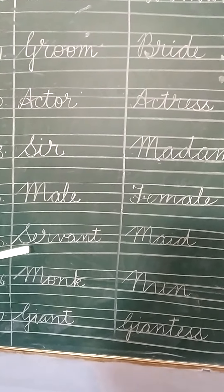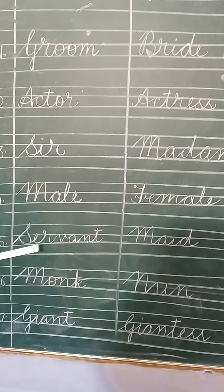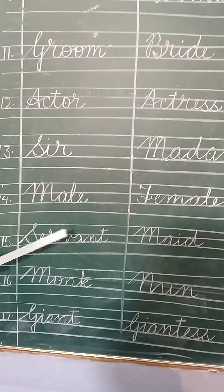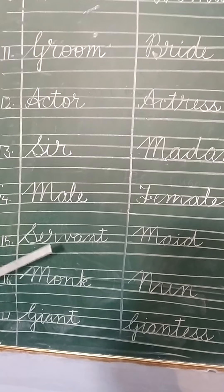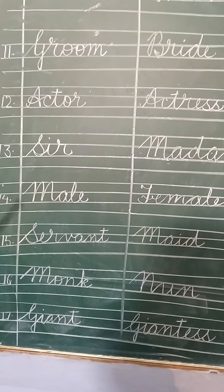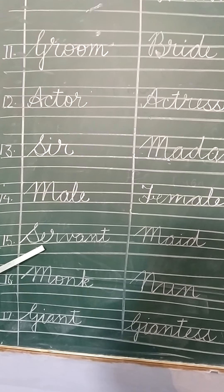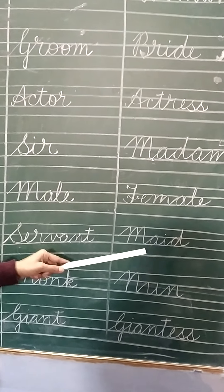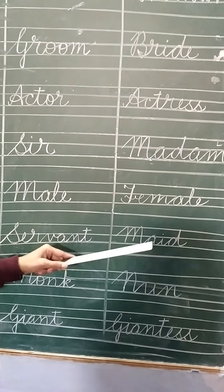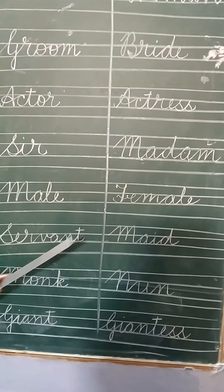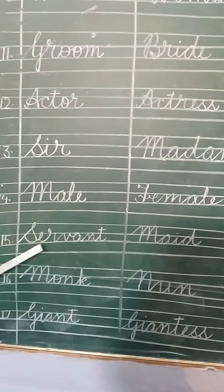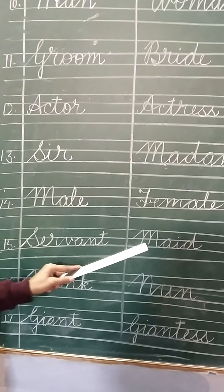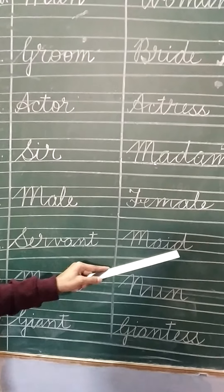Number 15 is servant. The person who works in your house is called servant. If the person is male, then we call him servant. If the person is female — a girl or woman — then we call her maid. S-E-R-V-A-N-T, servant. M-A-I-D, maid.